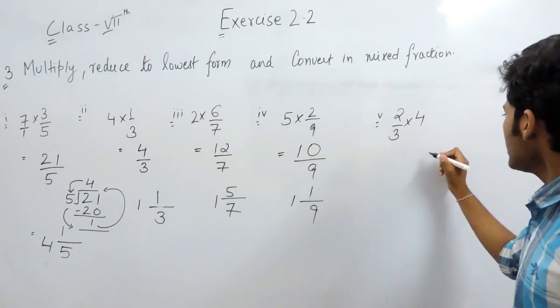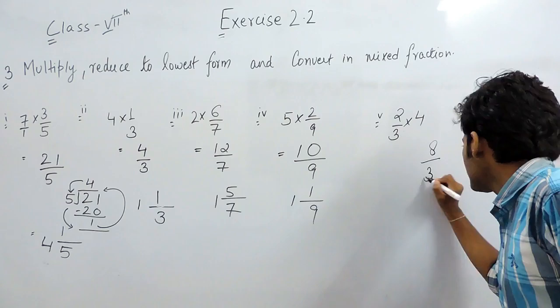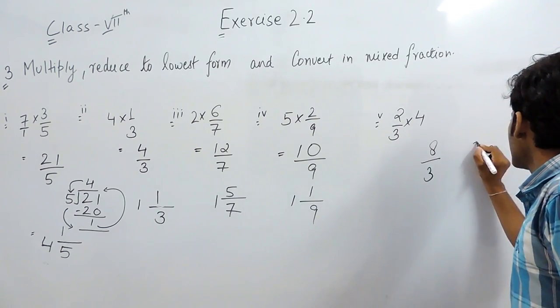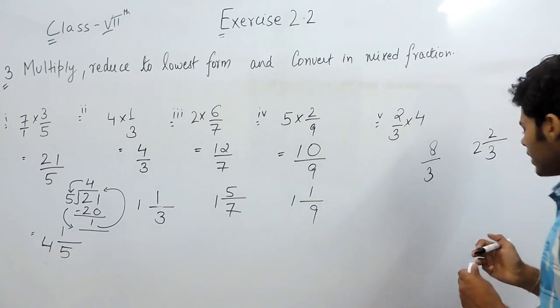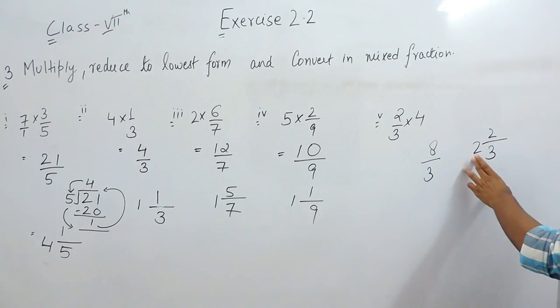And in the last part it will be 8 by 3. So the answer will be 3, 2 2 by 3, which means 3 2 times is 6, 6 plus 2 is 8. 8 is the numerator and 3 the denominator.